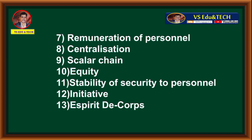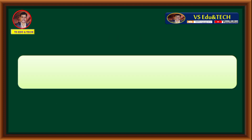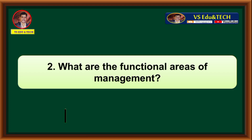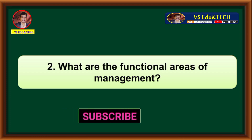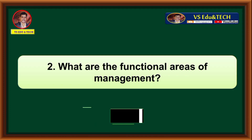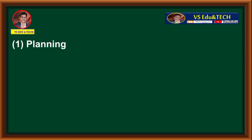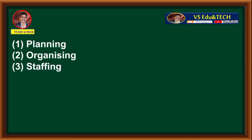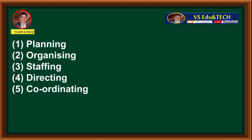Let's move to the second question: What are the functional areas of management? The functional areas of management are: 1st planning, 2nd organizing, 3rd staffing, 4th directing, 5th coordinating, and 6th controlling. These are the functional areas of management.